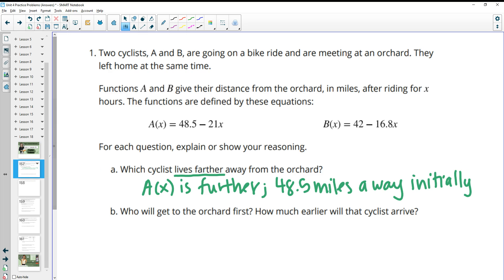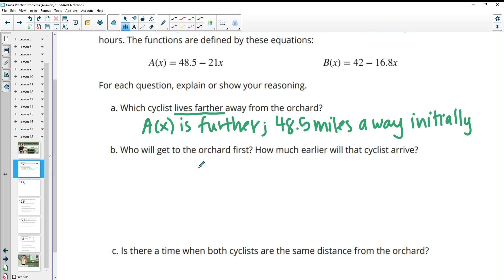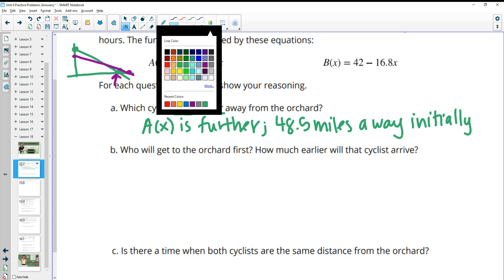Then for part B, it says who will get to the orchard first and how much earlier will they arrive? You could graph these. So you could put these in desmos and you could see their initial 48.5 will be here and then it's going to decrease. And then when it hits the horizontal axis, that's how long it would take to get to the orchard. So you can see which one arrives first. So it'll end up looking something like this. And cyclist A is going to get there first.